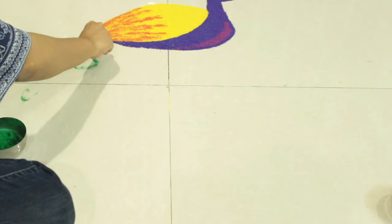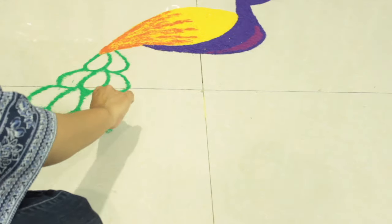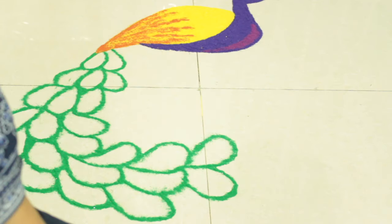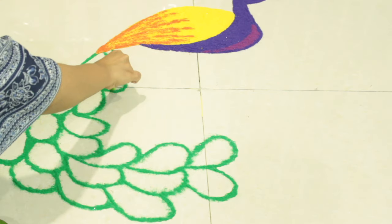Now we will start making the outline of the feathers using a dark green color like this. Start drawing the feathers at a curve so that the tail turns towards the right like this. Now take some light green color and start drawing a line in each of the feathers.